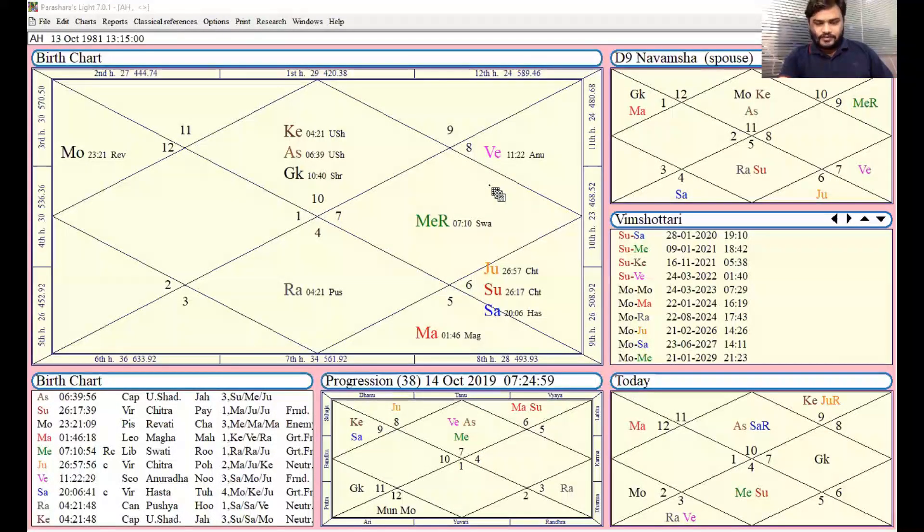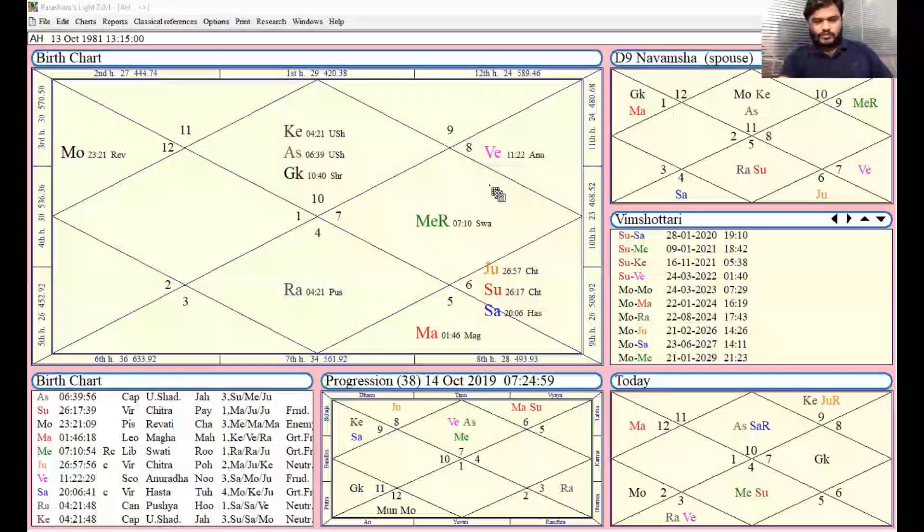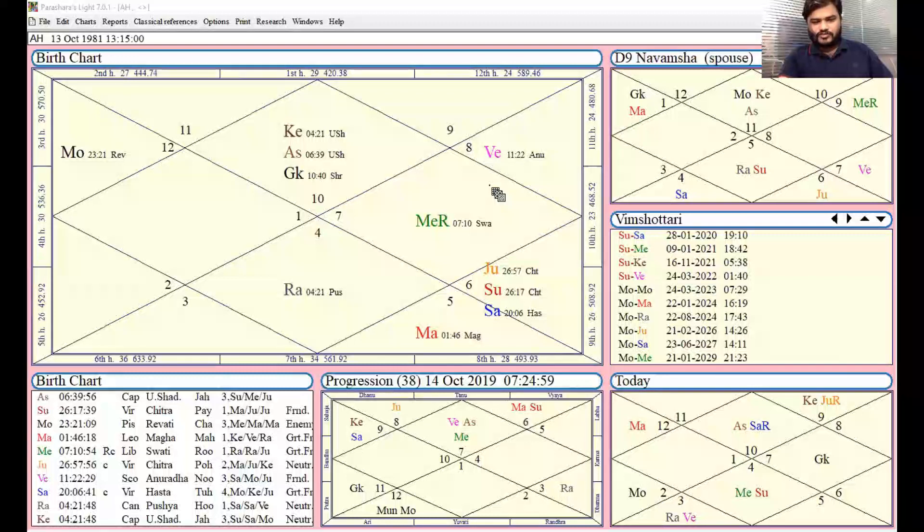The technique is wherever Rahu sits, some manipulation happens related to that area. Either the native will manipulate or the native will get manipulated from others. In this chart, you can see Rahu is in the seventh house. The seventh house is for marriage.